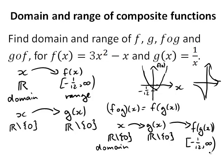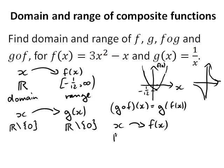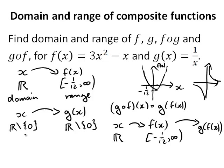Now let's look at g∘f. g∘f of x means we put x values into f first. We're allowed to put anything into f, and what we get out is the interval [-1/12, ∞). In the next step we want to put f of x into g. But g only accepts values apart from 0. Since 0 is included in the range of f, we're actually putting 0 into g — and that's not allowed. We need to take out 0 from the outputs of f.